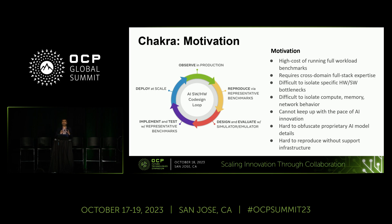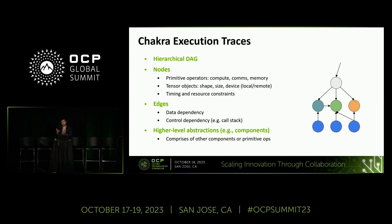To address this, we've been creating an abstraction for workloads running in a distributed sense. The key part is the notion of Chakra execution traces — fundamentally a DAG comprising the compute, communication, and memory operations that need to be scheduled when running a distributed workload. The nodes carry information about compute, memory, and communication behavior, tensor sizes, and operator runtimes. The edges capture dependencies, both control and data.